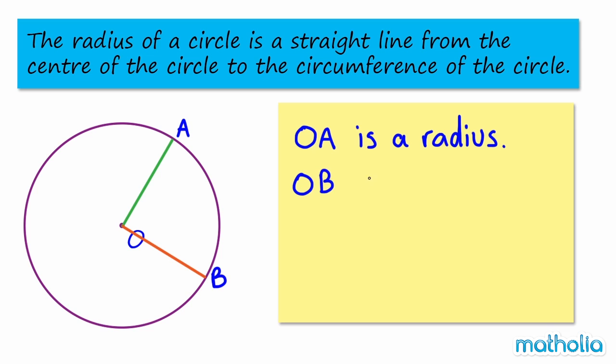The line OB is also a radius of the circle. Lines OA and OB are radii of the circle.